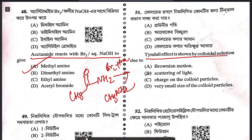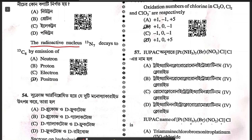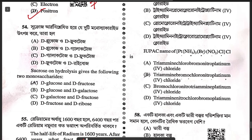Question 51: the Tyndall effect is shown by a colloidal solution due to scattering of light. Question 52: which among the following heterocyclic compounds contains sulfur atoms? Thiophene. Question 53: the radioactive nucleus ⁷N¹³ decays to ⁶C¹³ — it emits a positron (⁺¹e⁰).